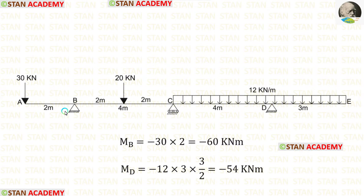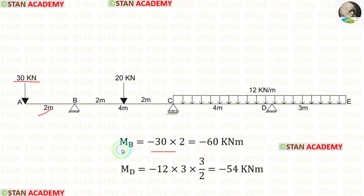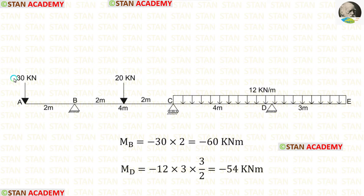We can easily calculate the moment at point B because there is overhanging on the left of B. To calculate MB, we have to find the moment at point B from point A. In the overhanging, there is only one load of 30 kN acting at point A. The distance of overhanging is 2 meters. When we multiply the load 30 with the distance, we get MB equal to minus 60 kN·m. We have to be very careful — we must always add a negative sign with the load to get a negative moment.